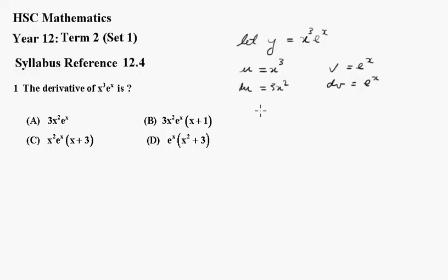So y dash equals u dv plus v du, which is x cubed e to the x plus 3x squared e to the x. Now I'll take out x squared e to the x as a common factor.